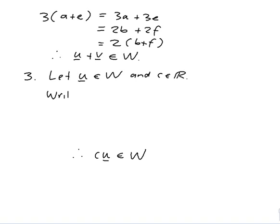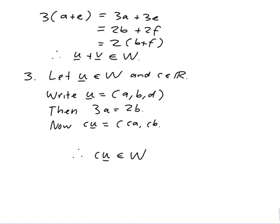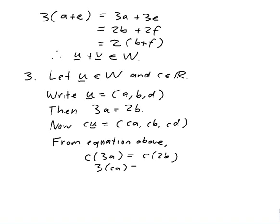So I'll write u is equal to a, b, d. Then because u is in w, it satisfies the equation. So 3a is equal to 2b. So we know that cu is ca, cb, cd. And what we want to know is if 3 times the first coordinate is 2 times the second coordinate. Well from the equation above, c times 3a is c times 2b. So 3 times ca is 2 times cb. So therefore cu is in w, because it satisfies the equation that w vectors are supposed to satisfy.